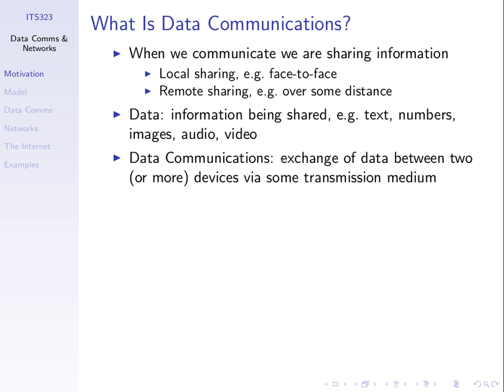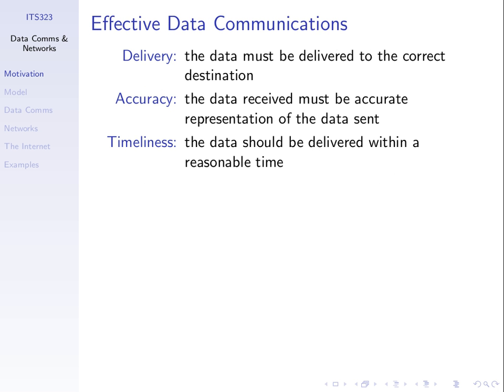We want to share information between computing devices — how do we do that in an effective manner? What do we mean by effective? How do we measure when our communications works well? There are three main metrics, three main measures for effective data communications: delivery, accuracy, and timeliness.